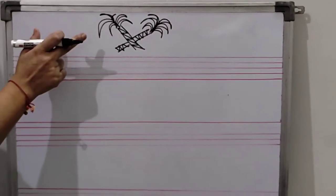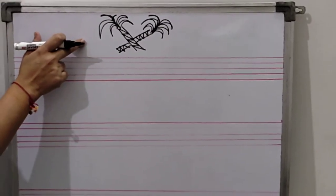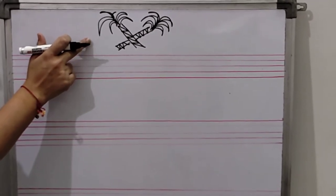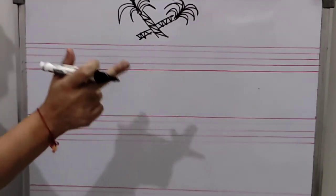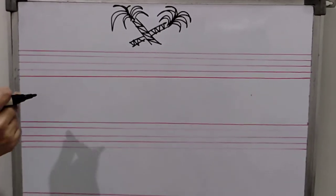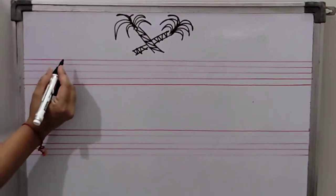Today we will learn aaj hum seekhenge. Kya seekhenge? Eek. Which one is this? Eek. I hope all children have learned imli. Today we'll learn eek.